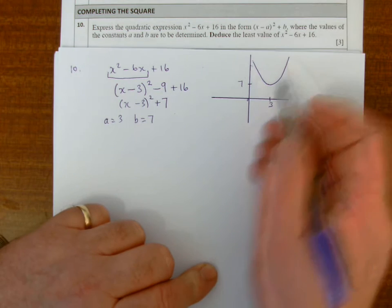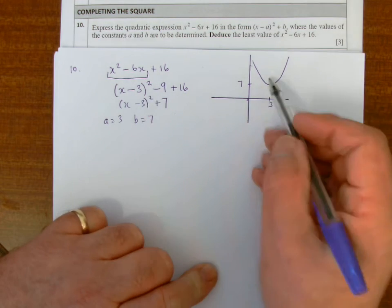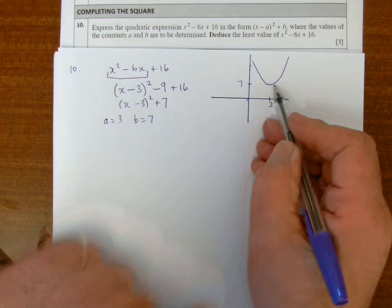So now I can see from this graph here that the least value of the expression, which is what I've drawn the graph of, is 7.